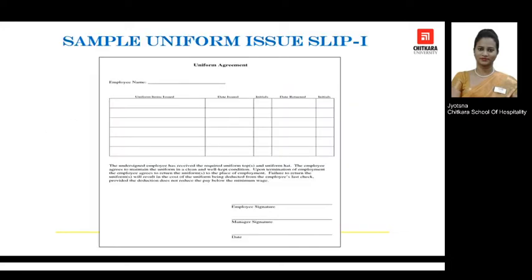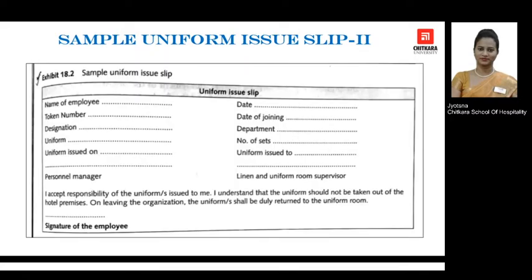This is a sample uniform issue slip format in which the details of the employee, the number of items being issued, and the quantity are mentioned. This is a second sample for the uniform issue slip, which contains the name of the employee, token number if any, date of issue, date of joining, department, designation, and number of sets being provided.